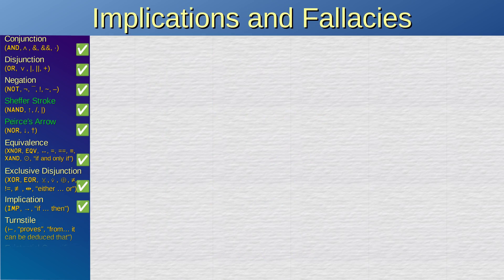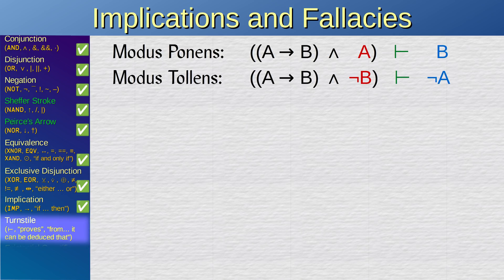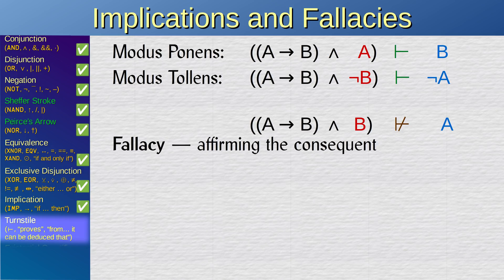Previously, we explored two valid conclusions that we can make using the material implication: the modus ponens, which is that if A implies B and A is true, then B must be true; and the modus tollens, which is that if A implies B but B is false, then A must be false. However, if A implies B and B is true and you conclude that A must be true, then you are invoking the fallacy of the converse — better known as the fallacy of affirming the consequent. A implies B does not lead to the deduction that B implies A.